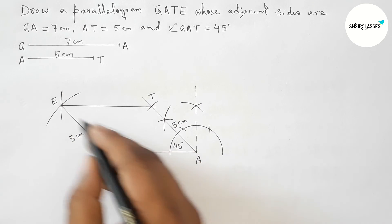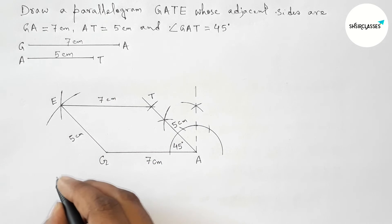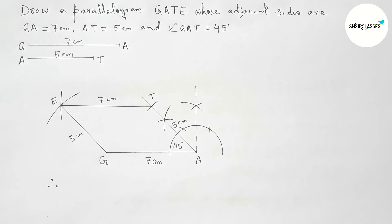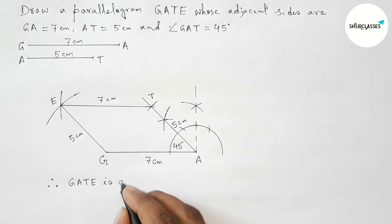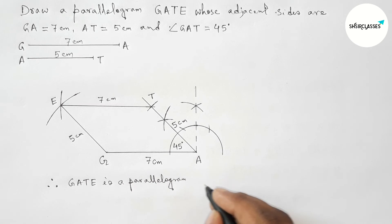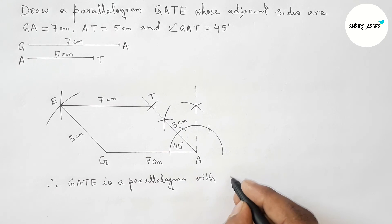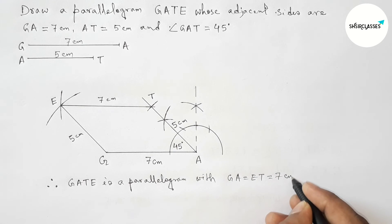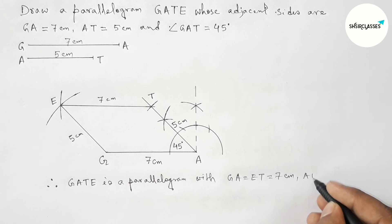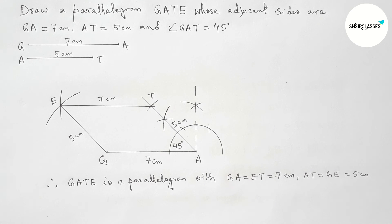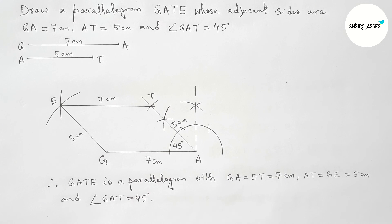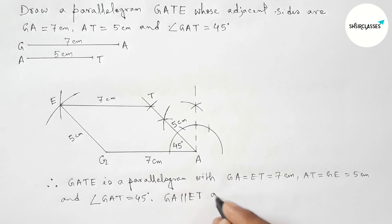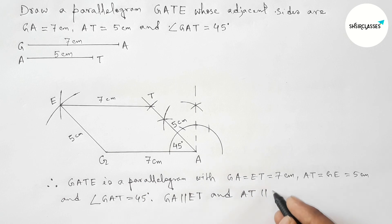This side and this side are both equal and opposite. Therefore GATE is a parallelogram, where side GA and ET are both equal and opposite, and side AT equal to GE equal to 5 centimeter. Angle GAT equals 45 degrees. Also GA is parallel to TE, and AT is parallel to GE. That's all, thanks for watching.